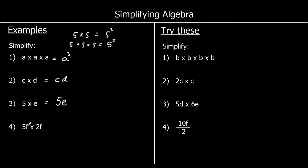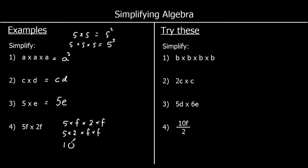Question 4: we've got 5 times f times 2 times f. We can do the multiplication in any order, so we can do 5 times 2 first, then multiply by f times f. 5 times 2 is 10, and f times f is f squared, so it's 10 times f squared, which we write as 10f squared.